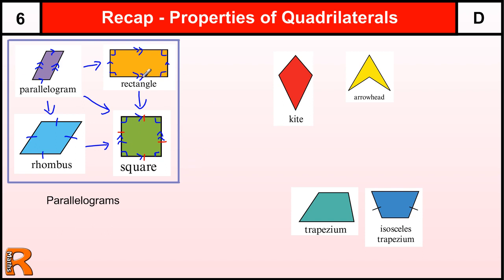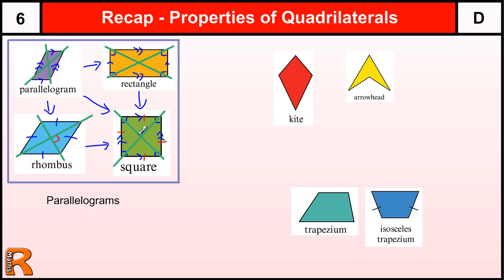We can also talk about symmetry and where the diagonals cross — a common theme when defining quadrilaterals. The diagonals of a rhombus cross at right angles. For a general parallelogram — one that is not a rectangle or a rhombus — the diagonals do not cross at right angles. The same is true for a rectangle: its diagonals do not cross at right angles, unless it is a square. A square's diagonals cross at right angles, just like a rhombus.